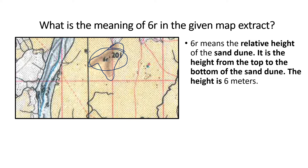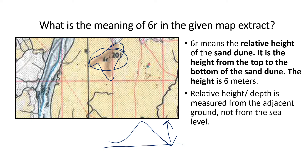The relative height is the height from the top to the bottom of the sand dune. Suppose this is a sand dune — the entire height from top to bottom is six meters. So '6R' means relative height; R stands for relative height. The height is six meters. Relative height and depth are measured from the adjacent ground, not from the sea level like BM or triangulated height.